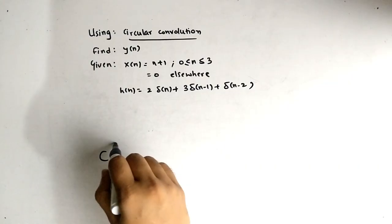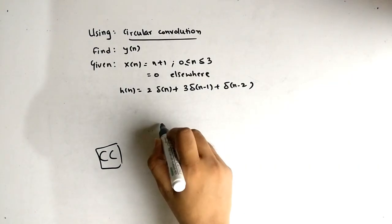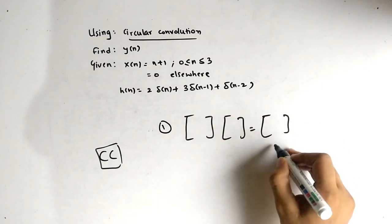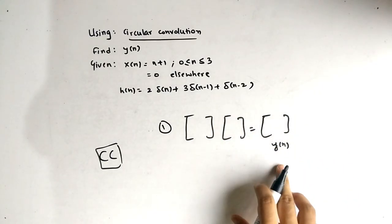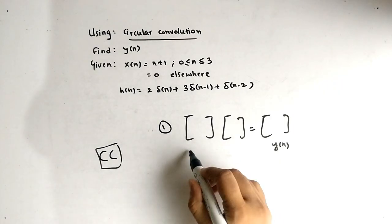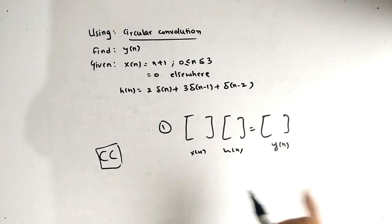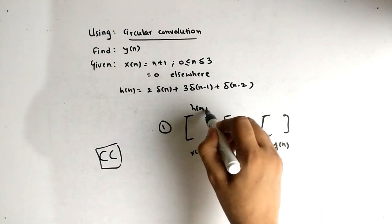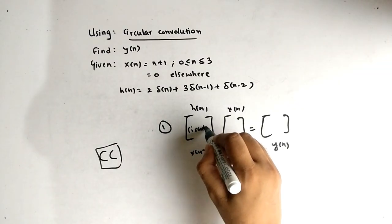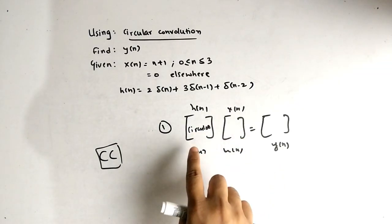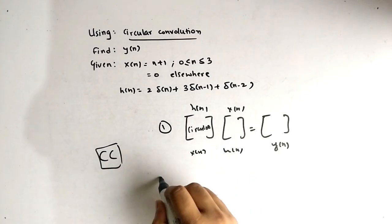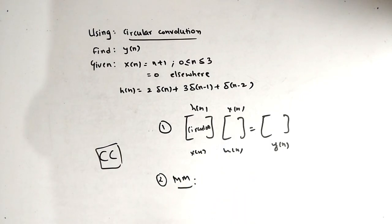When we talk about circular convolution, we have to note some points. The first point is we have to multiply two matrices to get the final answer — this is the matrix of y(n), because we have to find y(n). Here we have x(n) and h(n), or it can be the opposite way. This part is circular, as we will see when we solve this.